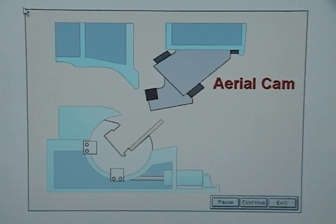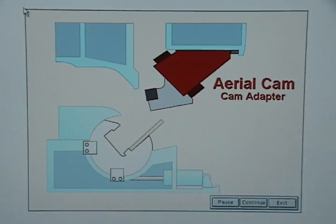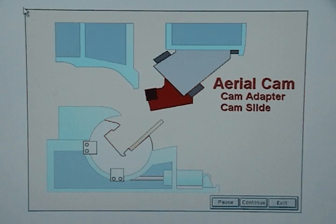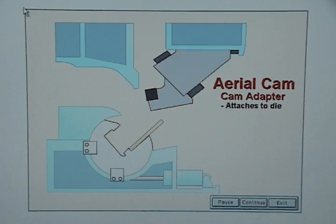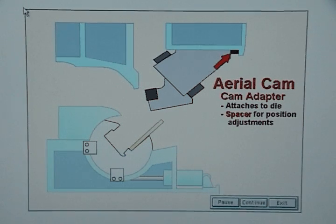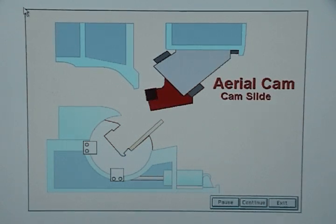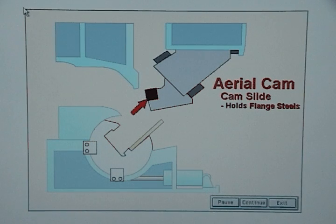An aerial cam is made up of a cam adapter and a cam slide. The cam adapter attaches to the die and has a spacer behind it for making position adjustments. The cam slide is usually the component that holds the flange seals.